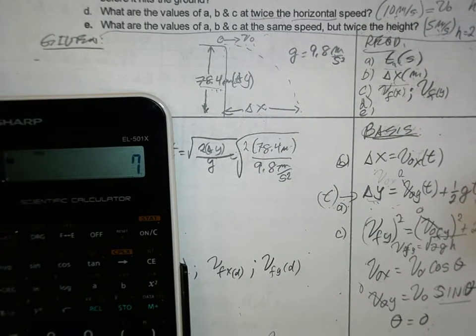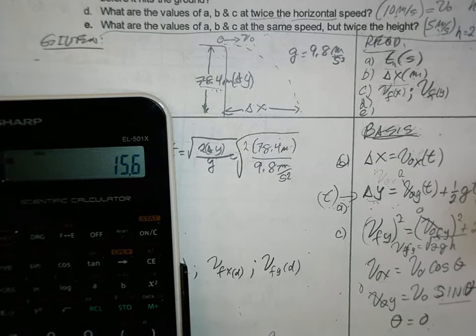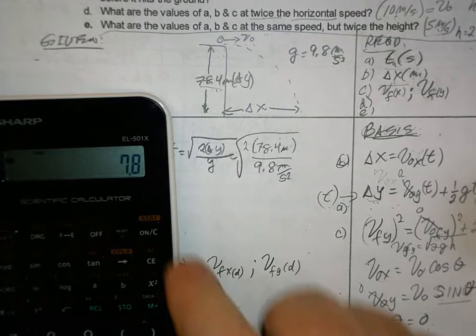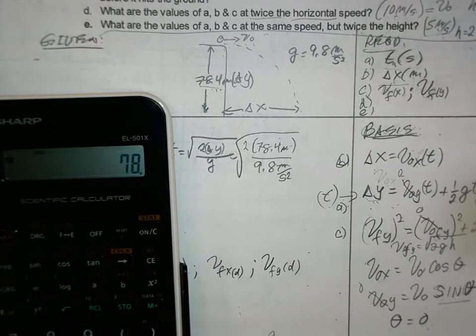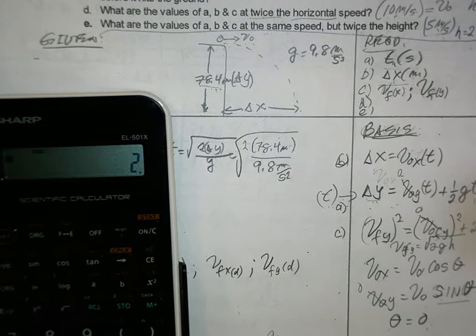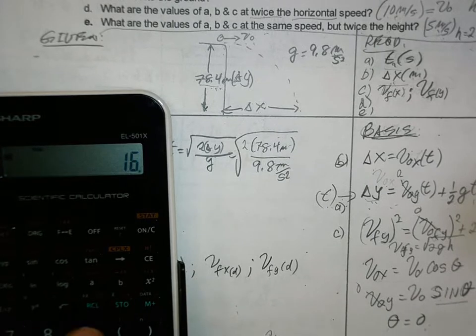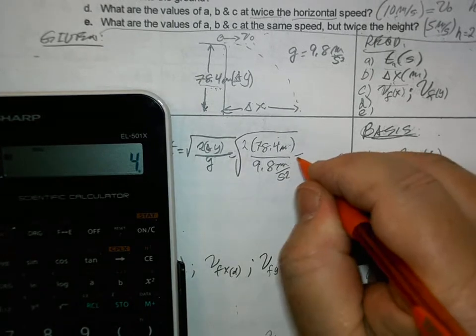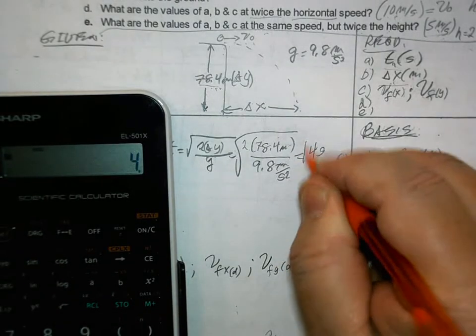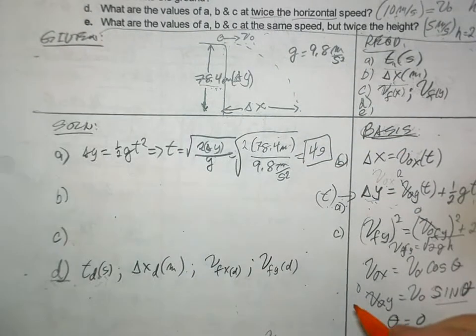2 times 78.4 times 2 divided by square root. The answer is 4 seconds. Easy.